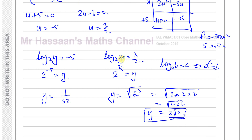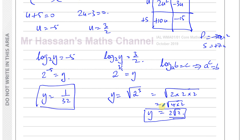Y can't be negative — although normally finding a square root gives a positive or negative answer, we only take the positive value here because the argument of a logarithm must always be greater than 0. The log of a negative number is undefined. The whole log expression can be negative, but the input cannot. So our two solutions are Y equals 1 over 32 and Y equals 2 root 2.